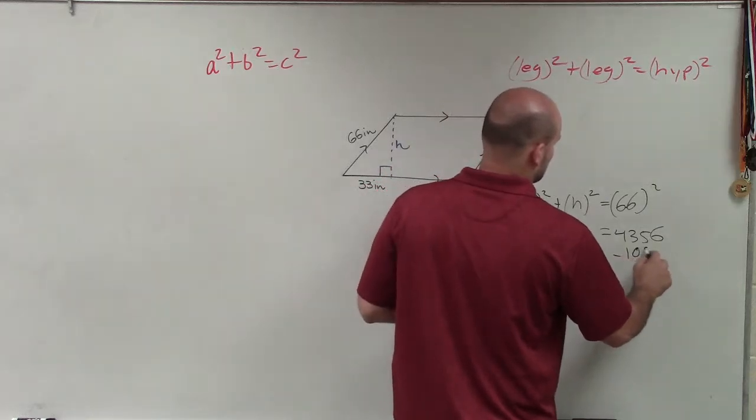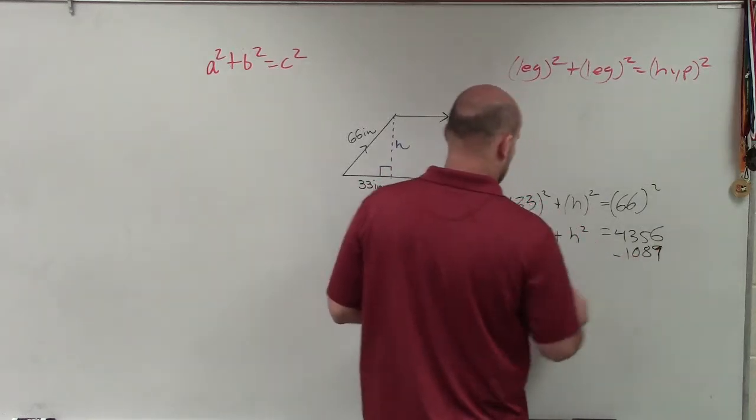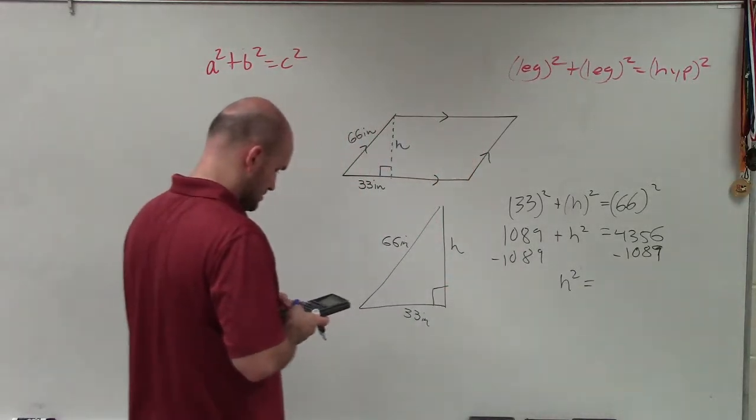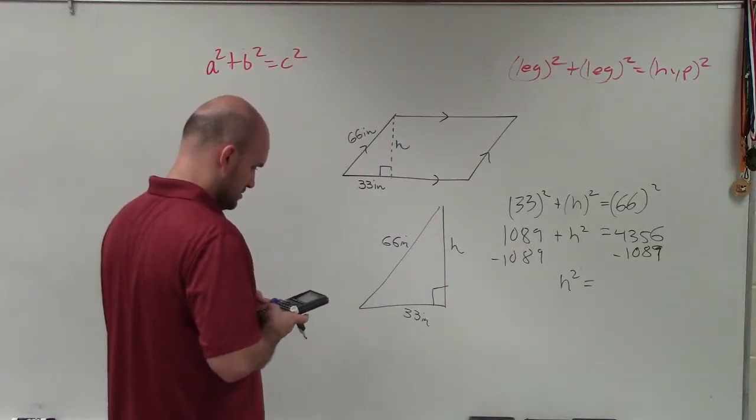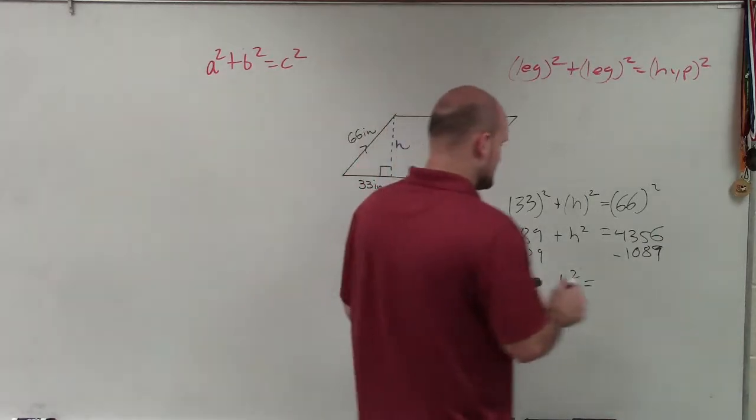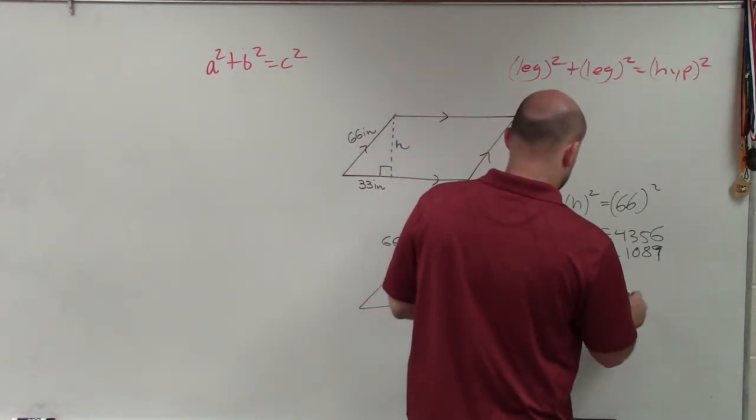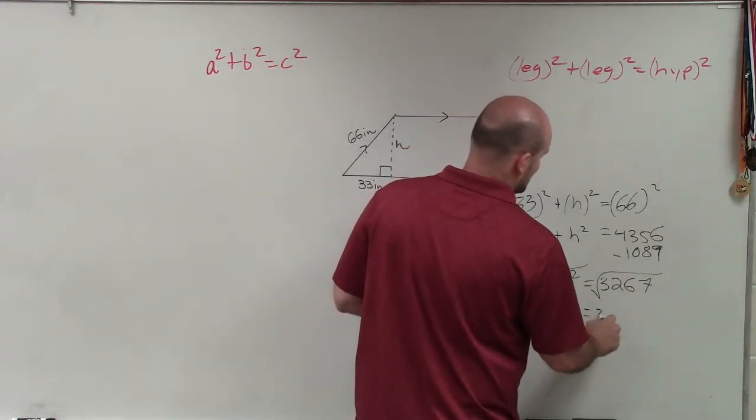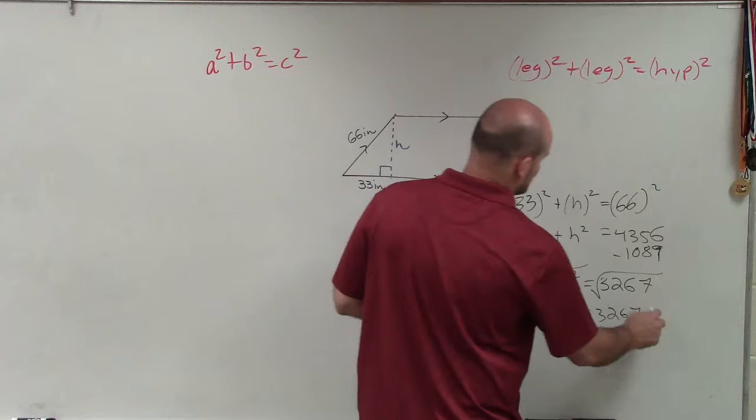and therefore I get h squared equals 3,267. Now I take the square root of both sides, and h equals the square root of 3,267.